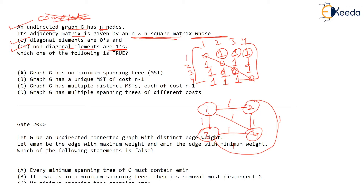Now the question asks: which one of the following is true? Option A: the graph G has no minimum spanning tree. That's impossible. For any connected graph, you will always have some minimum cost spanning tree. This cannot be true — this is false.